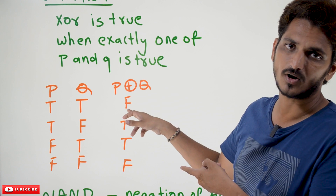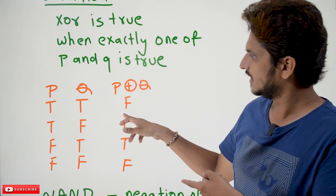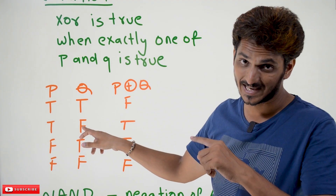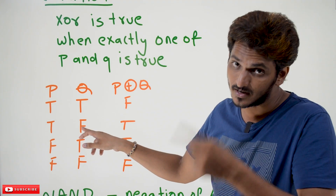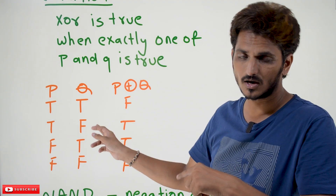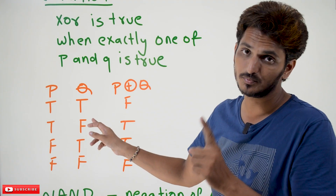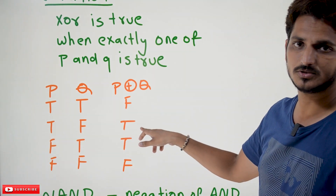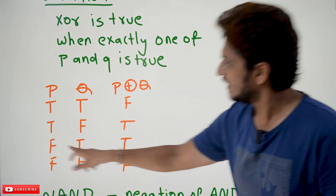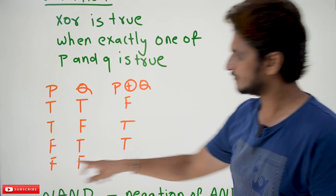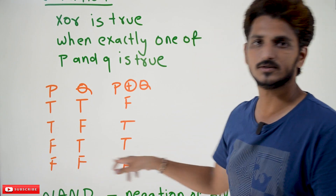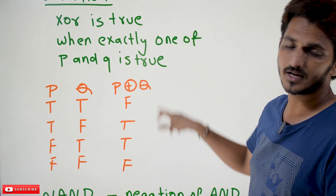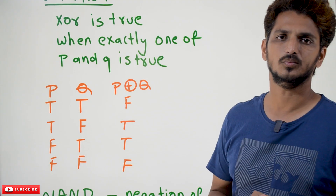When P is true and Q is false, exactly one of P or Q is true, so the output is true. The full XOR truth table gives: true-true → false, true-false → true, false-true → true, false-false → false. This is the condition for the XOR connective.